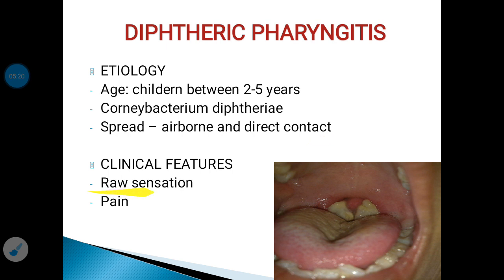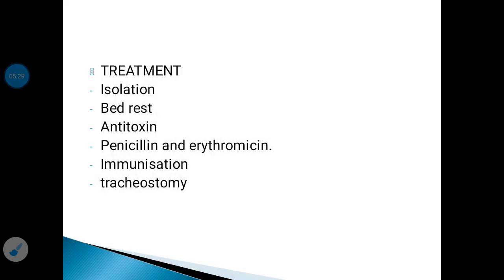The infection produces clinical features like raw sensation in the throat, pain, and presence of a diphtheric membrane. Treatment begins with isolating the patient to prevent spread of infection. Bed rest is advised. Antitoxin is given immediately if diphtheria is clinically suspected — 20,000 units per patch are given parenterally. Antibiotics like penicillin and erythromycin are used to control the infection. Immunization of contacts should be performed. Tracheostomy is necessary in cases of diphtheric laryngitis with respiratory obstruction.